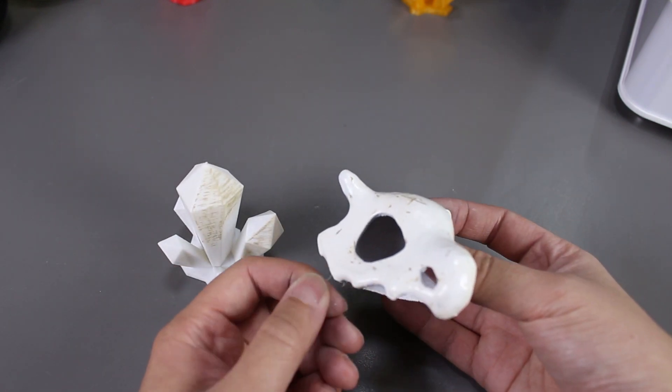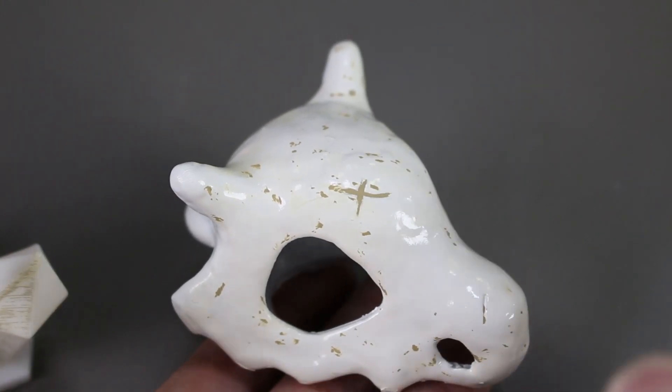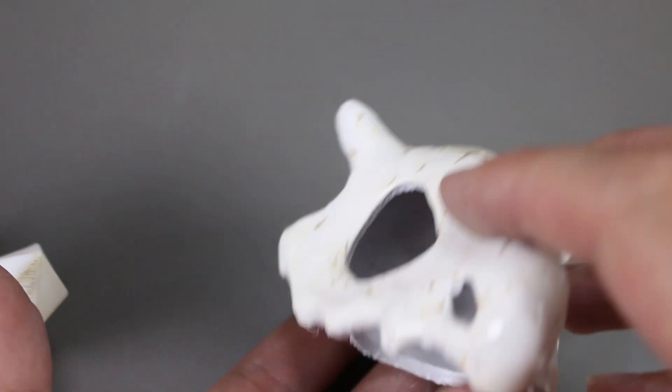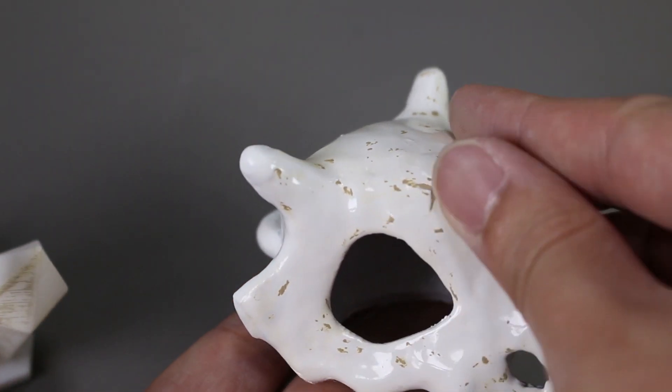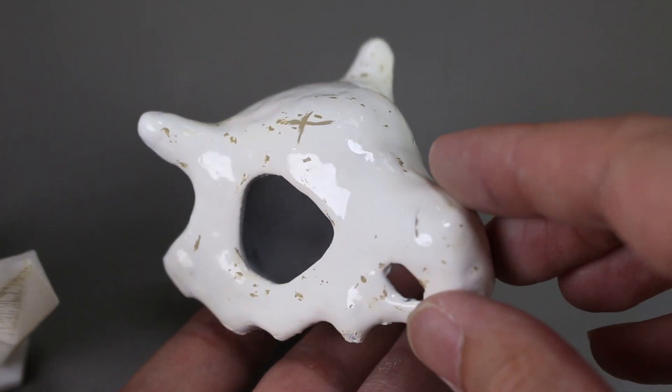But now let's take a look at our Cubone skull. It's a bit yellowish now and looks a little worn out. The effect which I was hoping for. It also sticks on really nice and filled in the gaps I made with the putty earlier nicely.